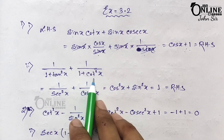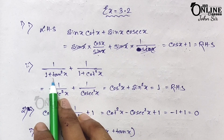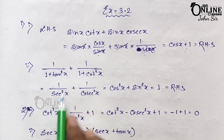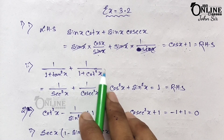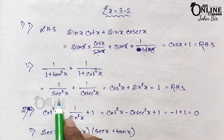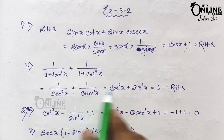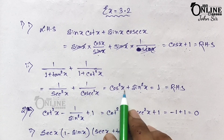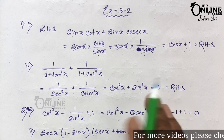Number 2: 1/(1 + tan²x) + 1/(1 + cot²x) — you have to show this equals 1. Using the formula sec²θ − tan²θ = 1, we get 1 + tan²x = sec²x. Similarly, 1 + cot²x = cosec²x. So we get 1/sec²x + 1/cosec²x, which equals cos²x + sin²x, and by the formula sin²θ + cos²θ = 1, it equals 1.